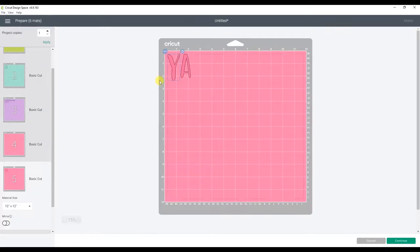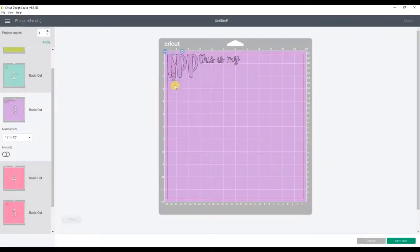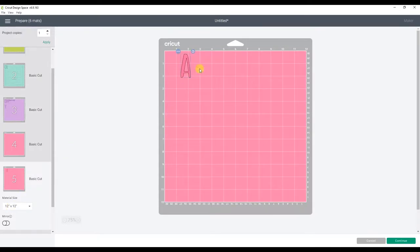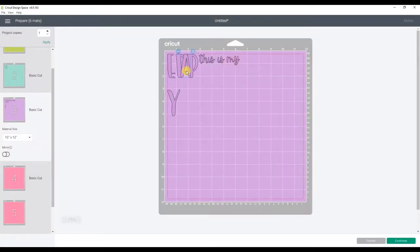Then go to the next color you want to move over. I'm going to move over all of my pink cuts next. When I move the next color over, I like to bring the letter down to the next whole number on the mat. This makes it super easy for me to line up my vinyl later on the mat to make sure I don't accidentally cut outside of the material. Then we will do the same thing for the rest of the colors.